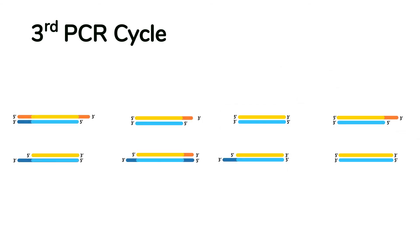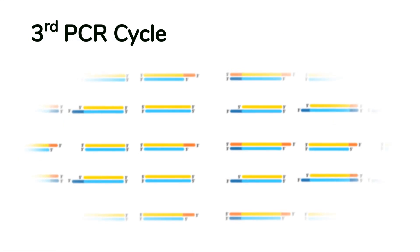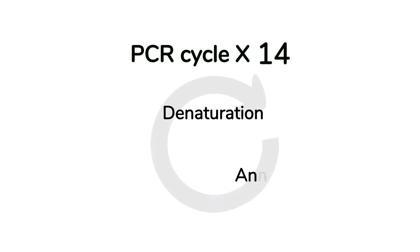In the following cycles of PCR, we will enrich this final product exponentially. Typically, a PCR protocol will repeat about 30 cycles of denaturation, annealing, and elongation.